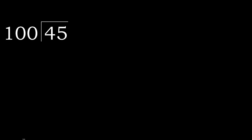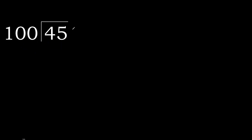45 divided by 100. 4 is less, therefore next. 45 is less, therefore next. There is no number, therefore complete — always complete with 0. Here, 0 point.